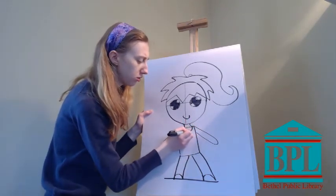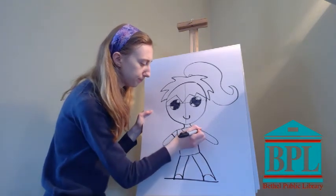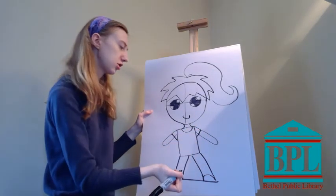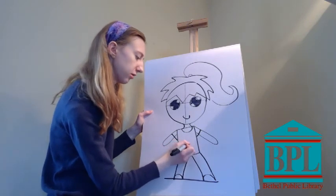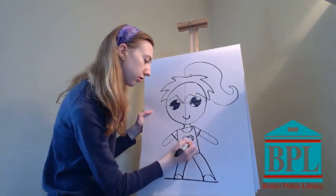I'm going to add a shirt. I'm going to do a little U for the top of the shirt, a little line down here. Looks like he's wearing a t-shirt. Maybe I'm going to give them like a little picture on their shirt, a little heart.